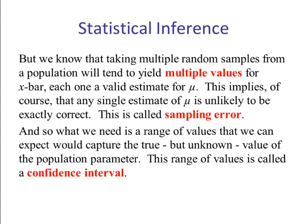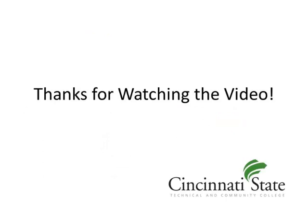So what we need is a range of values that we can expect would capture the true but unknown value of the population parameter. This range of values is called a confidence interval, and we'll discuss confidence intervals in our next video. Thanks for watching.